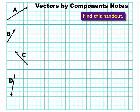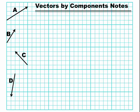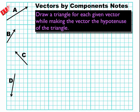So here are my vectors. If you have this handout, you can go ahead and take notes on it, or you can just follow along. To start with, I'm going to draw a triangle for each vector so I can deconstruct my vector into its components. So I'll have my little triangles for A, B, C, and D, where the vector becomes the hypotenuse of my triangle.